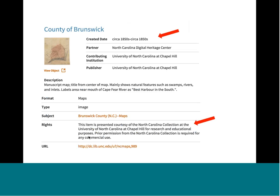Despite that ruling, some cultural institutions still claim a copyright in public domain work they've digitized — sometimes seeking attribution or credit for the hard work of digitization, sometimes to monetize high-resolution reproductions. UNC did this a lot in the past. For example, a manuscript map from the 1850s — definitely in the public domain — carried a statement requiring prior permission for commercial use, which legally we can't require. We are in the process of cleaning up these erroneous rights statements.